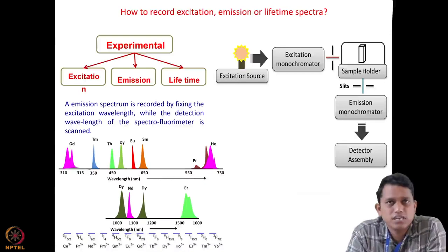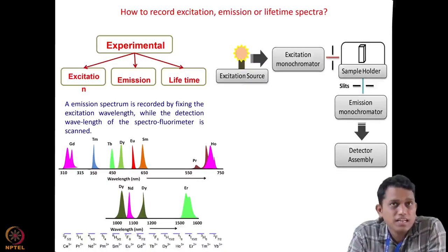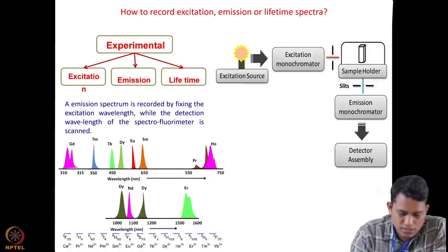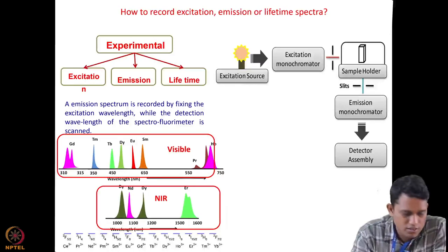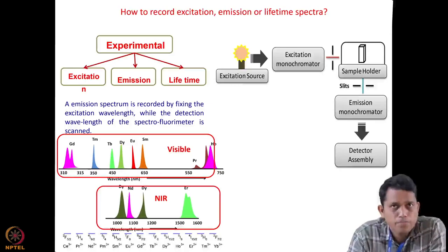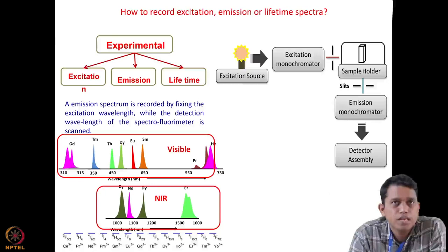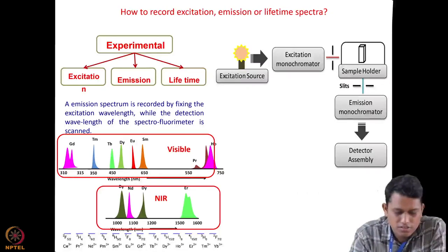Let us understand how one records the excitation spectra or the emission spectra before going into detail about the europium spectra. Here I have given you some emission spectra of different lanthanides, and you can see that many lanthanides emit in the visible region — some also emit in the NIR region. Most colored compounds emit in this region; europium is generally reddish in color coming from its emission, and terbium is green, as you can see from its emission in the green region.